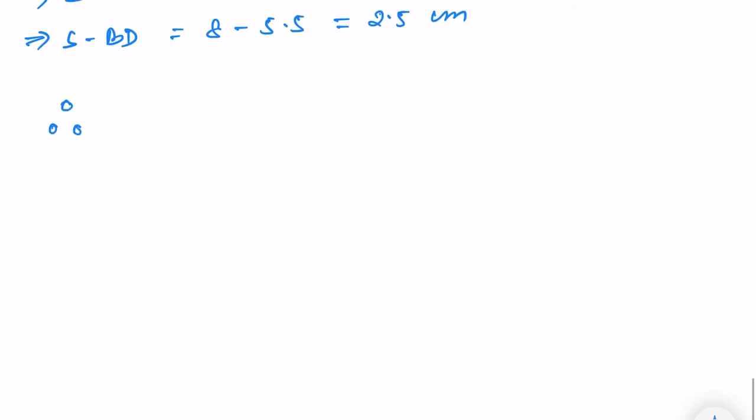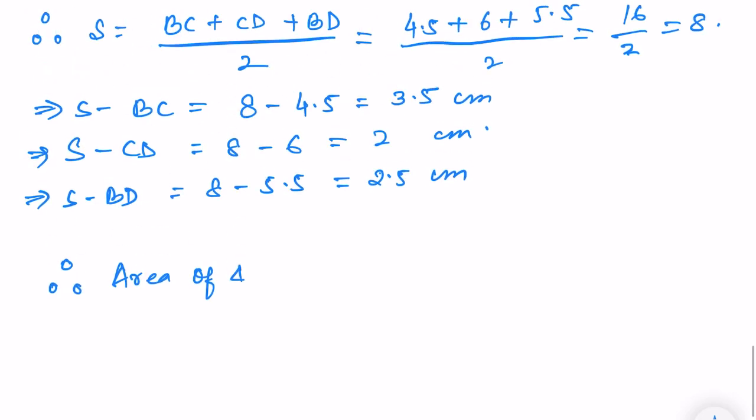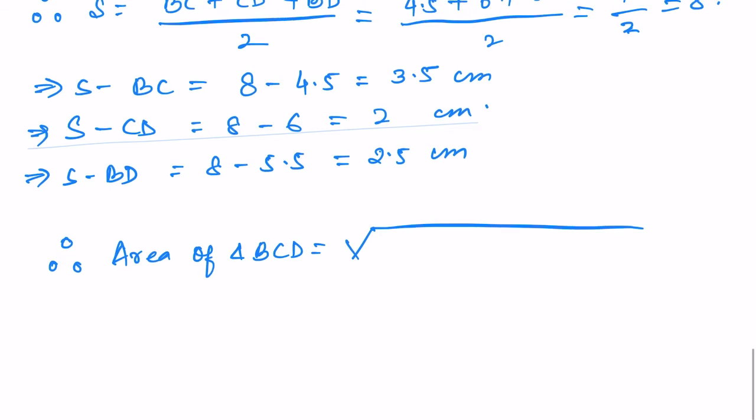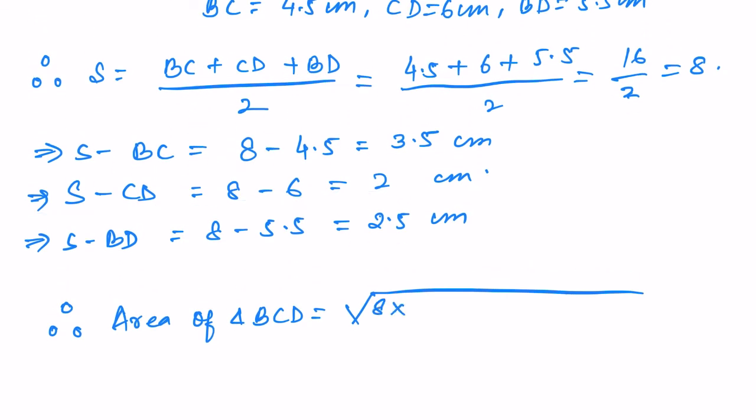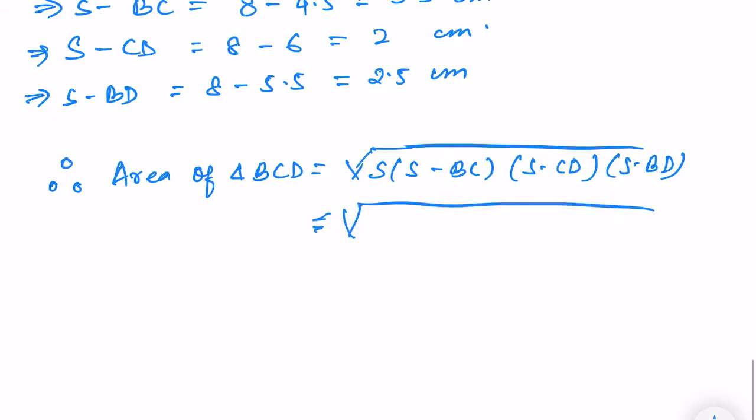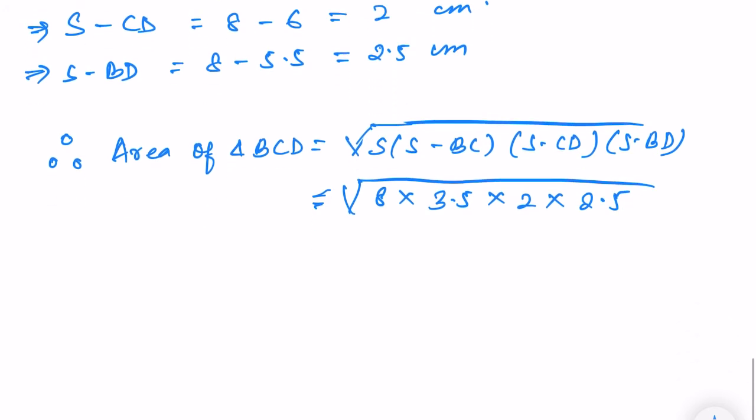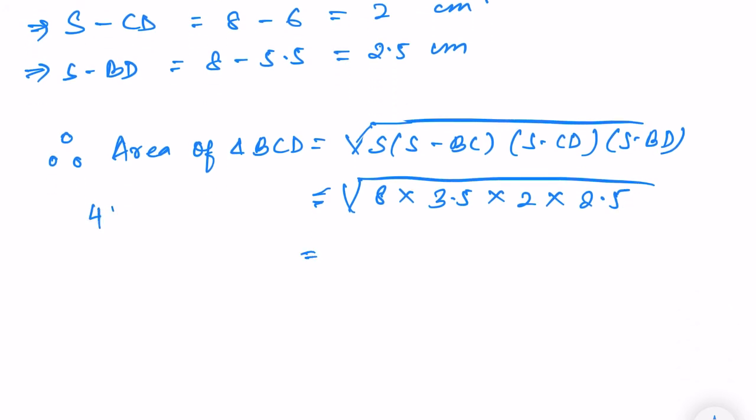Therefore, area of triangle BCD is equal to root over S into S minus BC into S minus CD into S minus BD. So S here is 8 into S minus BC, it is 3.5 into S minus CD, 2 into S minus BD, 2.5. Multiplying these numbers, it will be 140, 140 root centimeter square.